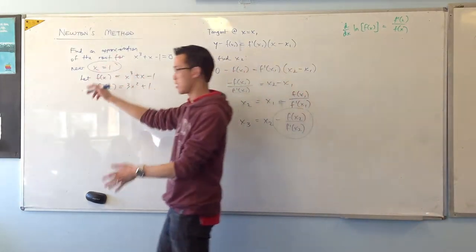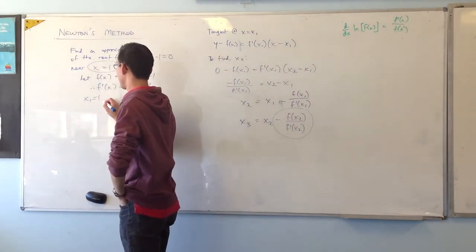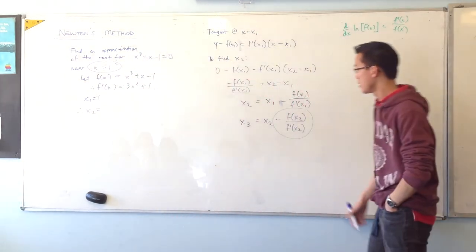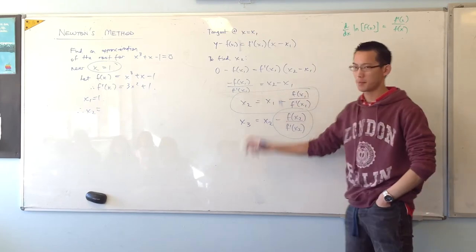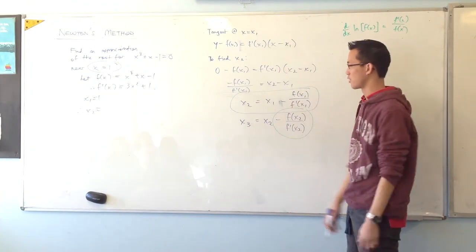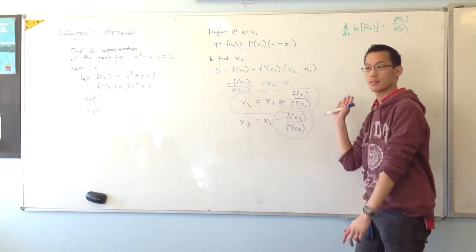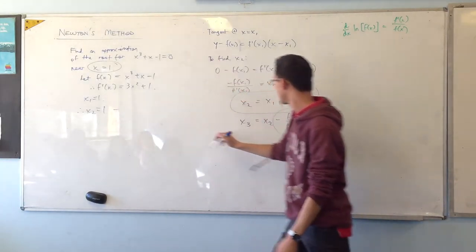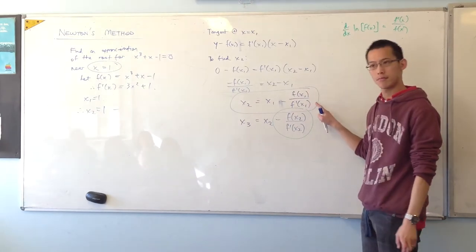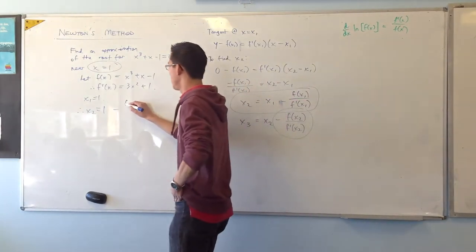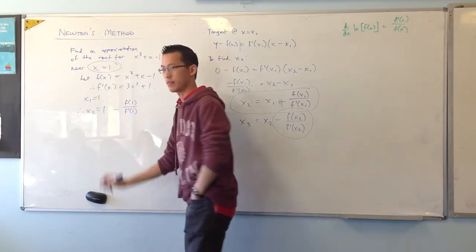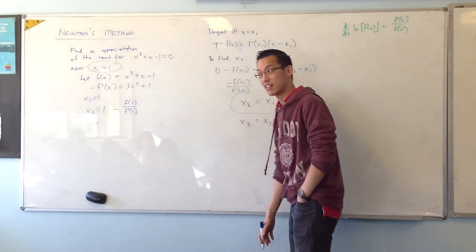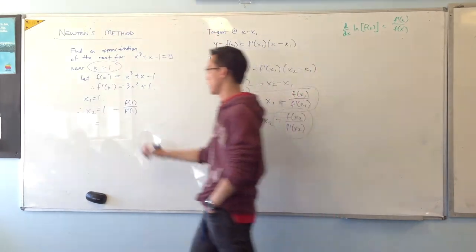Now my first guess is x equals 1, right? So therefore, I can go straight to saying, well, what will my next guess be? And here's my thing, which you want to put a big colourful rectangle around it. I'm just going to recite this. So it's going to be x₂, which is 1, minus f of 1 on f' of 1.